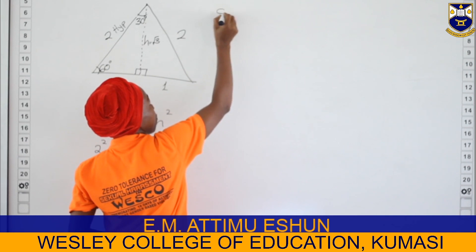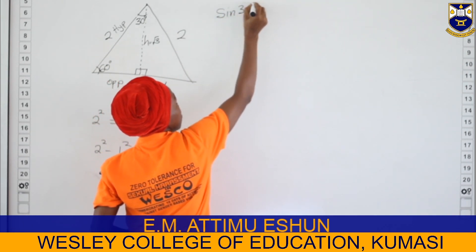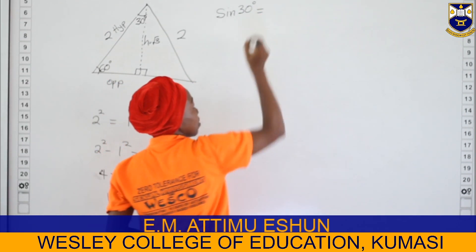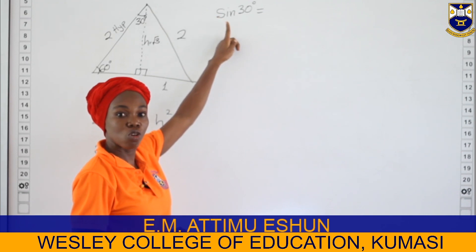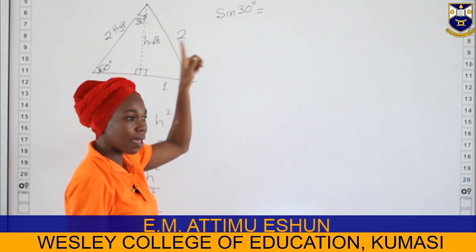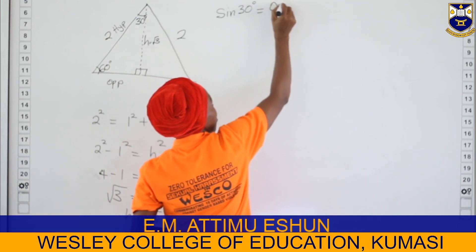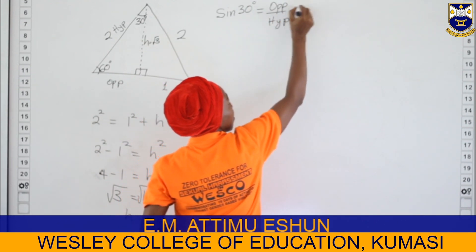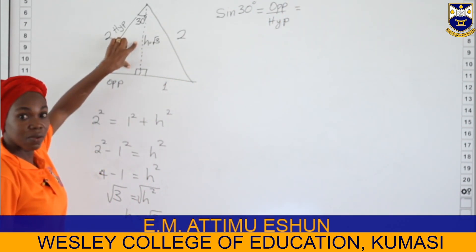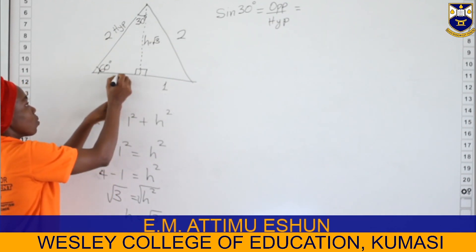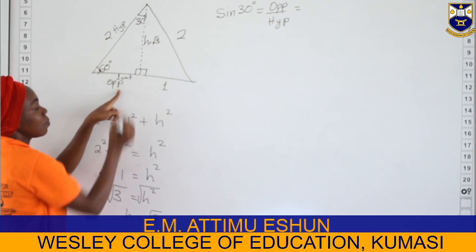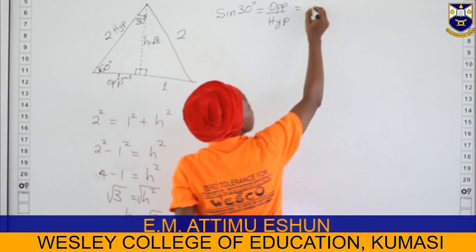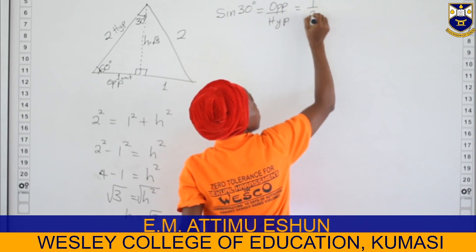We can now find the trig ratios. For sine 30 degrees: sine is the ratio of the opposite side to the hypotenuse side. From our triangle, the opposite side is one unit and the hypotenuse is two units, so sine 30 equals one half.